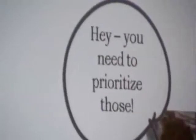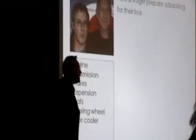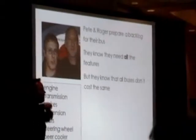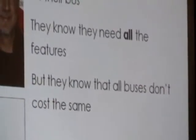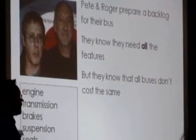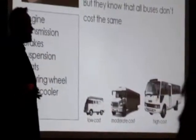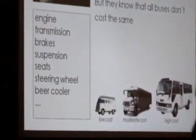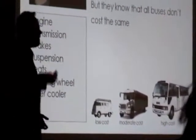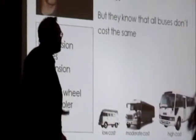The experienced agilist says: hey, you need to prioritize those, as if one was more important than the other. But they realize they need all of these things, and they've got another strategy for getting everything they want. They know that all buses don't cost the same — it's not as though a cheaper bus just doesn't have brakes. They know they can get a cheap bus, a moderately priced bus, or a much higher priced bus, and what makes them different is things like a bigger engine, better brakes, more seats, or cooler tinted glass.